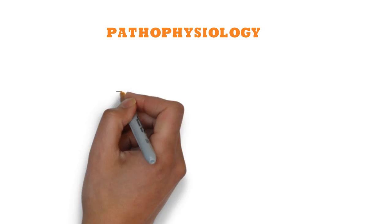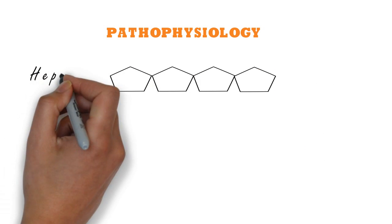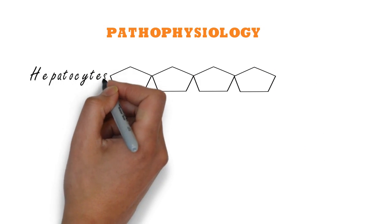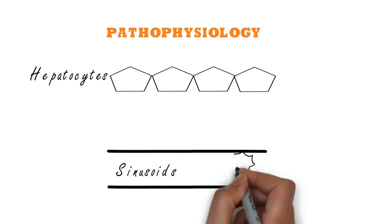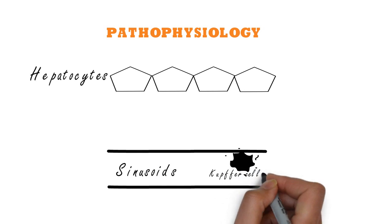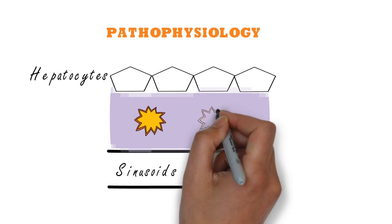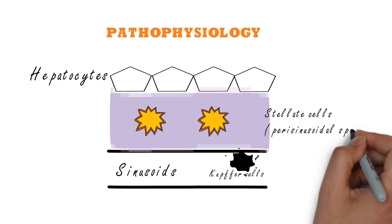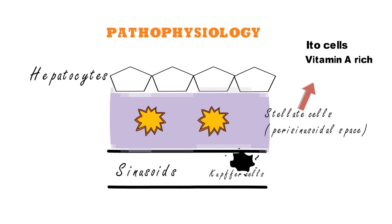Now first about pathophysiology. The liver is formed by parenchymal cells, that is hepatocytes, and non-parenchymal cells. The walls of hepatic sinusoids are lined by non-parenchymal Kupffer cells. Activated Kupffer cells destroy hepatocytes and contribute to fibrosis. Other non-parenchymal cells are stellate cells in the perisinusoidal space, also called Ito cells or vitamin A-rich cells.